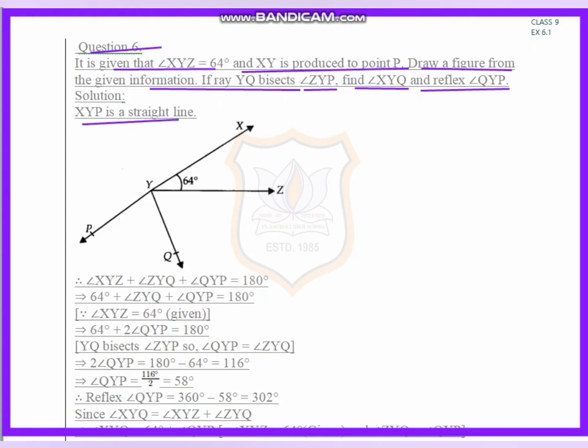Here XYP is a straight line. Therefore the sum of angle XYZ, angle ZYQ, plus angle QYP equals 180 degrees.